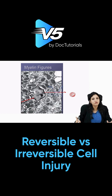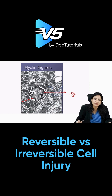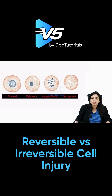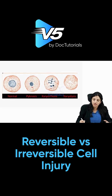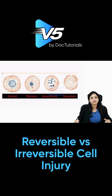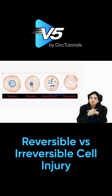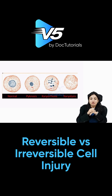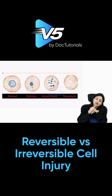Remember, myelin figures are predominantly seen in irreversible injury but some can be seen in reversible injury as well. This is what a normal cell looks like. Pyknosis is like a dot, karyorrhexis is fragmentation, and karyolysis is complete dissolution. These are the images you should know before progressing into necrosis.